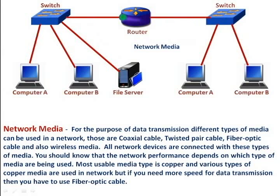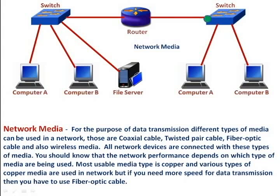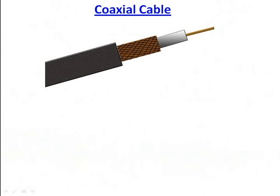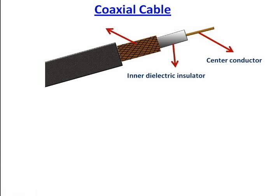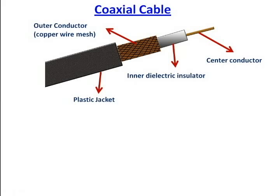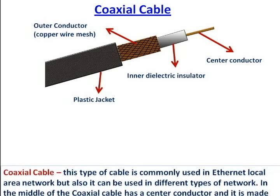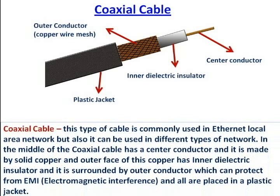The most usable media type is copper, and various types of copper media are used in networks. But if you need more speed for data transmission, then you have to use fiber optic cable. Coaxial cable is commonly used in 10Base2 and 10Base5 Ethernet local area networks, but it can also be used in different types of networks.